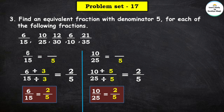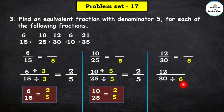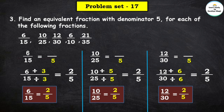So the equivalent fraction of 10 upon 25 is 2 upon 5. Next fraction is 12 upon 30. We have to find the equivalent fraction with denominator 5. 30 divided by which number equals 5? 6 × 5 = 30, so we divide by 6: 12 ÷ 6 = 2 and 30 ÷ 6 = 5. So here 2 upon 5 is the equivalent fraction of 12 upon 30.